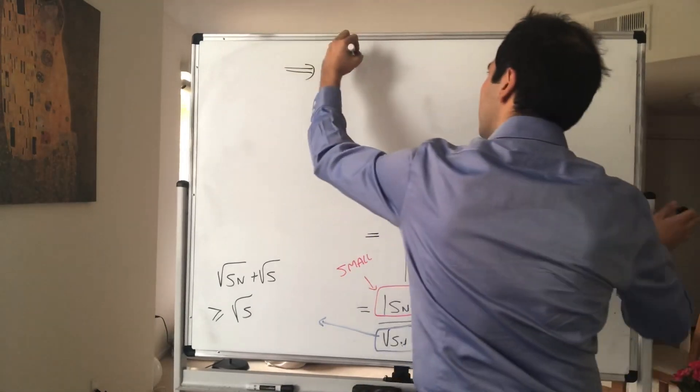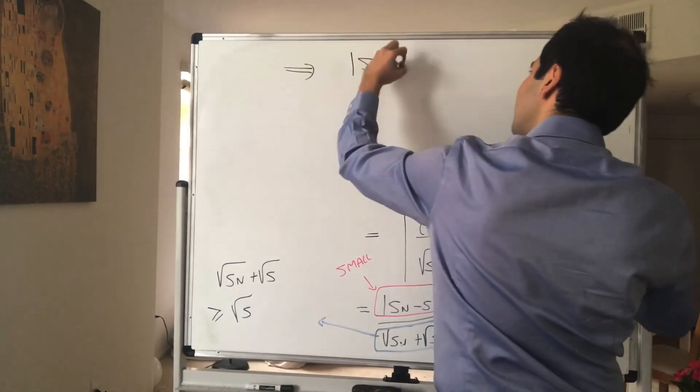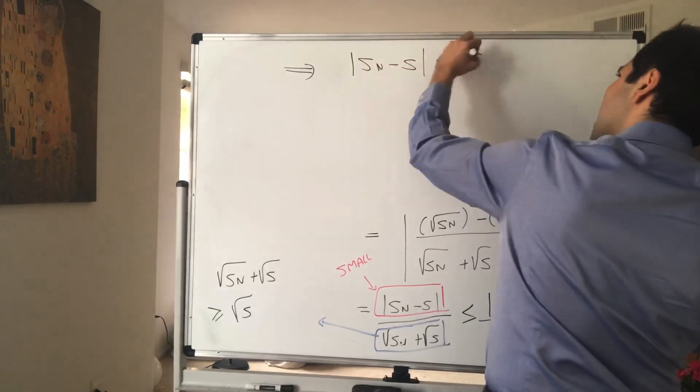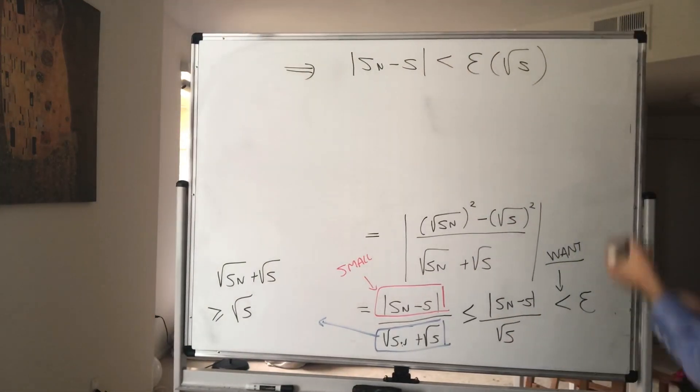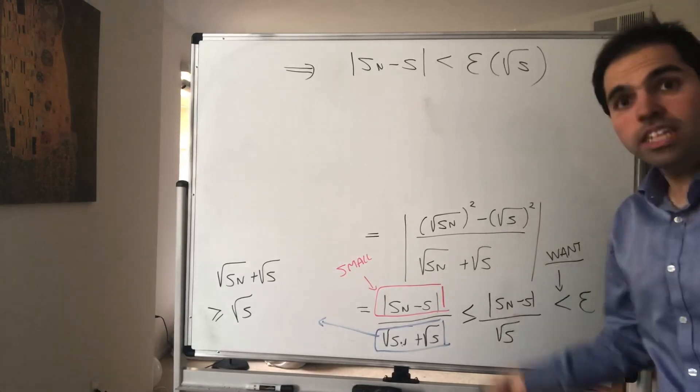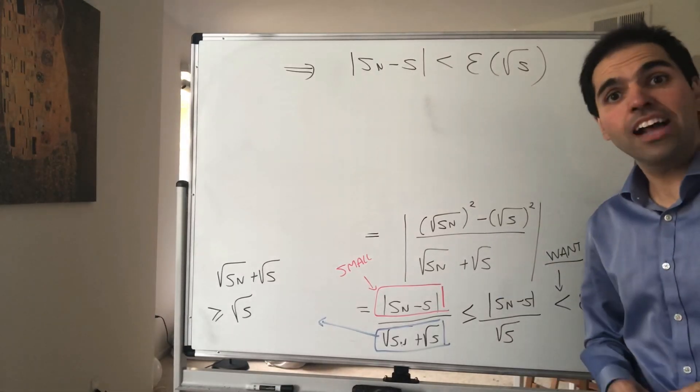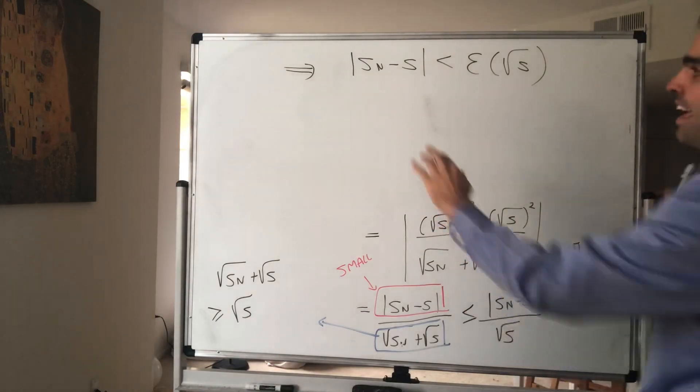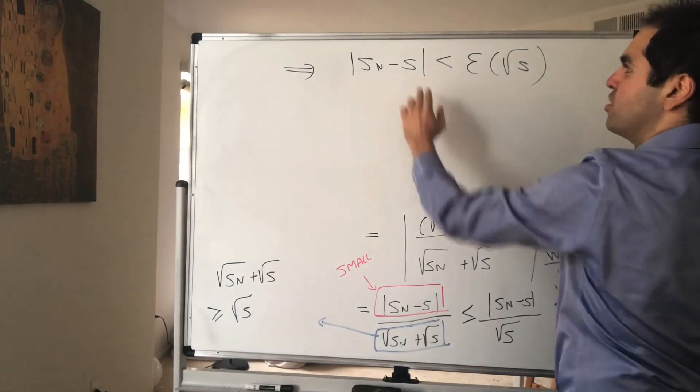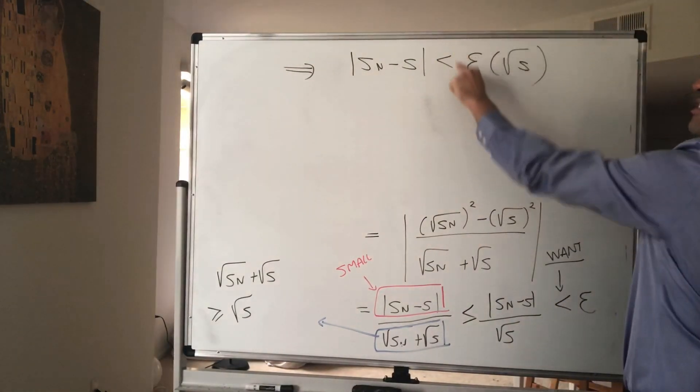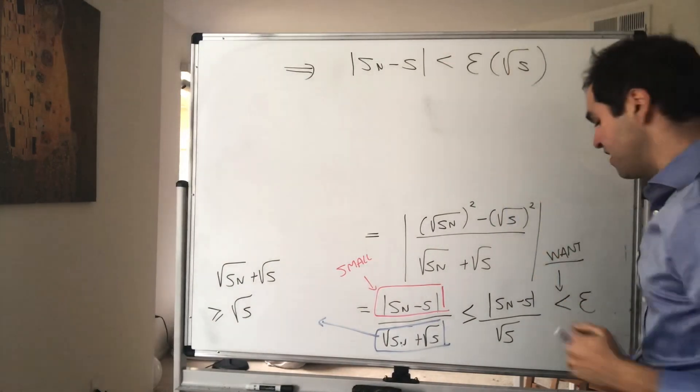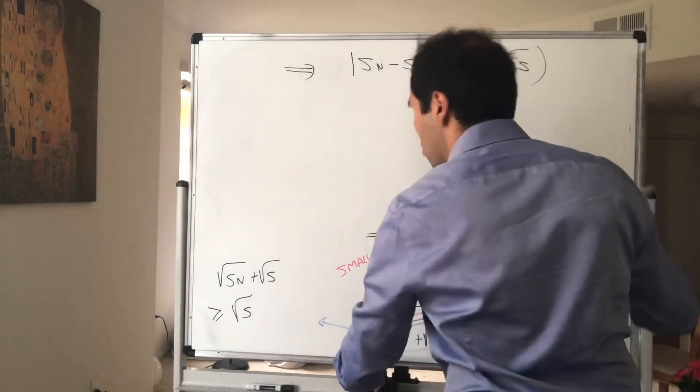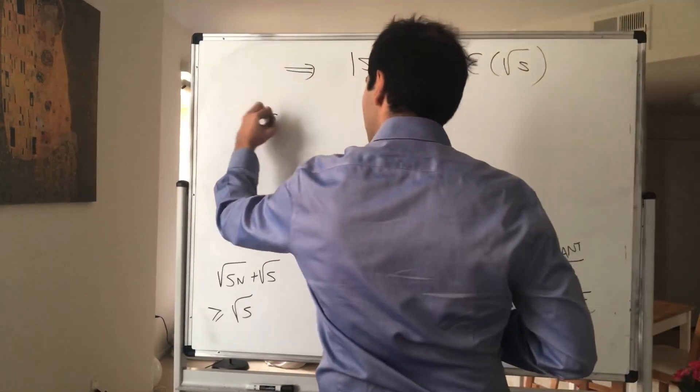That becomes Sn minus s is less than epsilon times square root of s, which finally brings us to the actual proof. Because again, since Sn converges to s, we can have this less than epsilon times square root of s, because this is just any arbitrary positive number. So now let's do our actual proof.